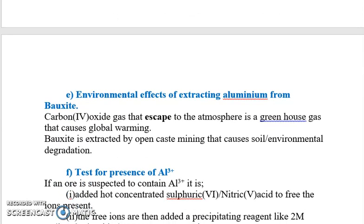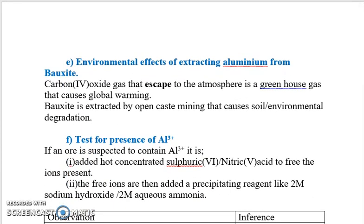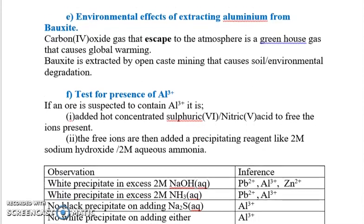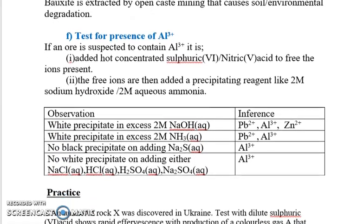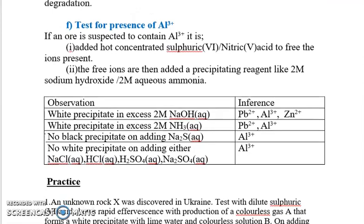The environmental effects of extracting aluminium from bauxite include: carbon dioxide gas that escapes to the atmosphere, which is a greenhouse gas and causes global warming. Bauxite is extracted by open cast mining, leading to environmental degradation — open pits are very dangerous to human beings and also cause soil erosion.